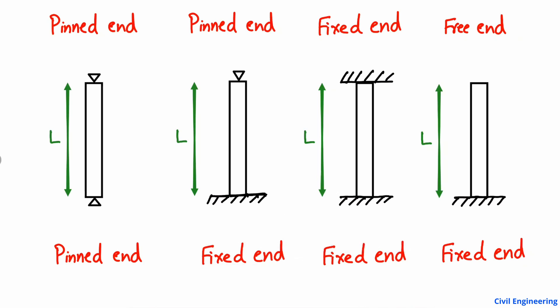If I consider from the left side, the first column has a pin end on one end and also a pin end on the other end. You can see here — this is a pin end and this is also a pin end. When I apply the load P on this type of column, the load is applied from the top.